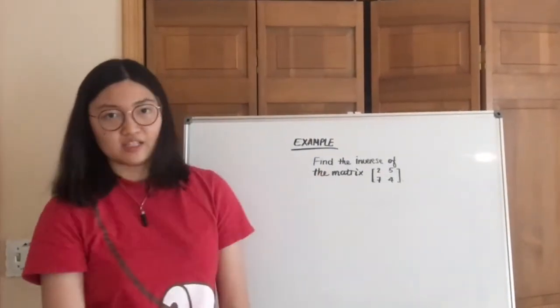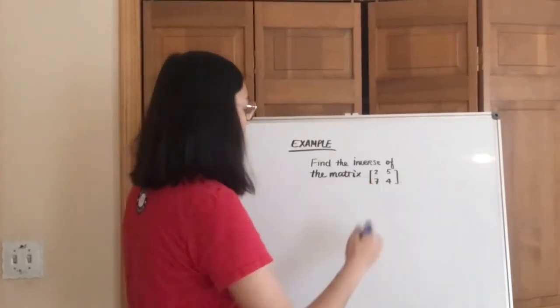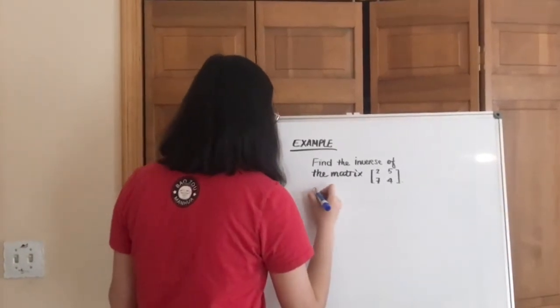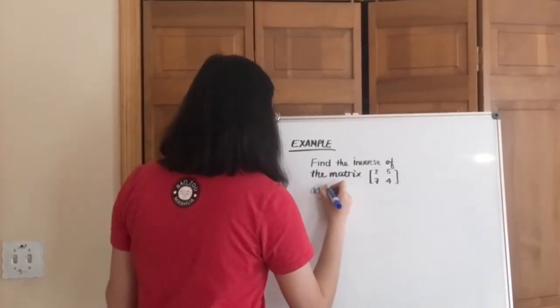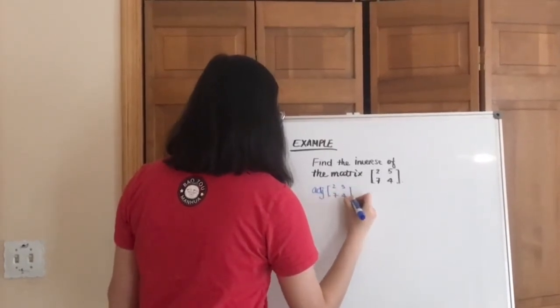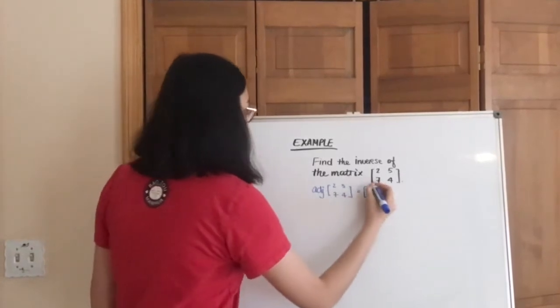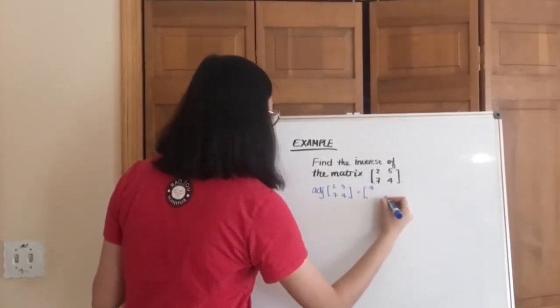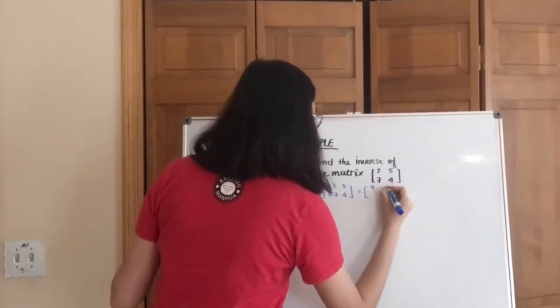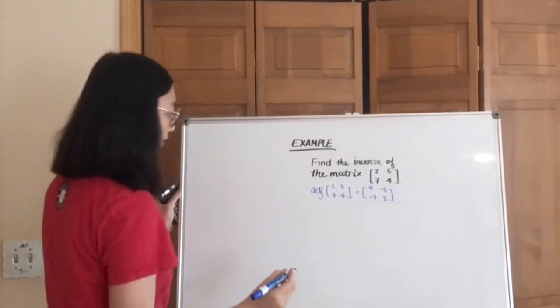So here's an example. Let's try it out. We're going to find the inverse of the matrix [2, 5, 7, 4]. So let's start with finding the adjoint of the matrix. So as we know, we're going to flip the position of the 2 and the 4. 4 is here, 2 is here. And then we're going to put negative signs in front of the 5 and the 7. And that's your adjoint.